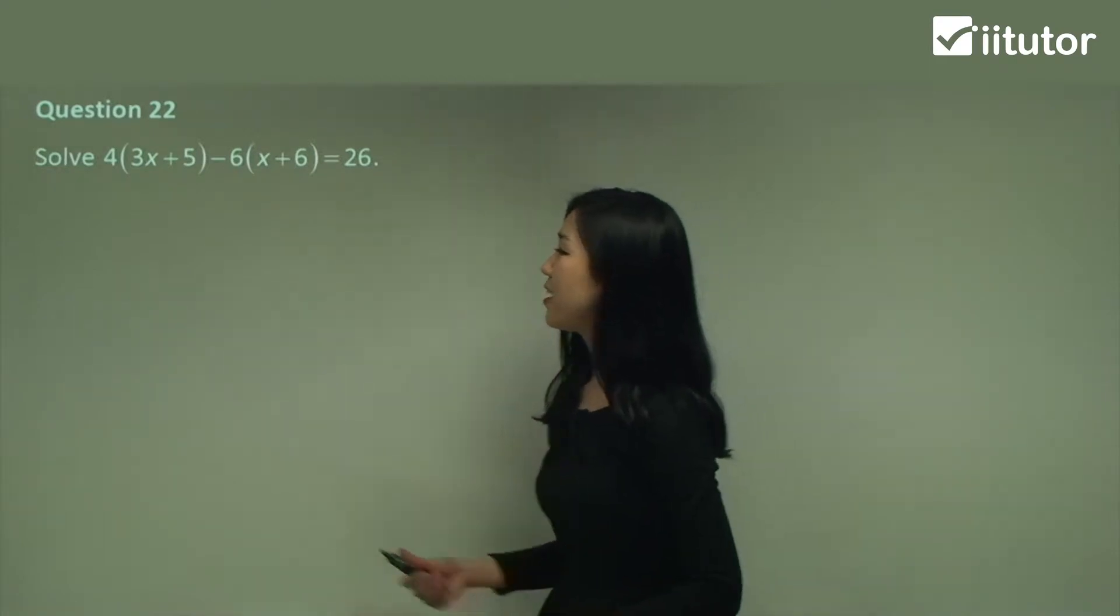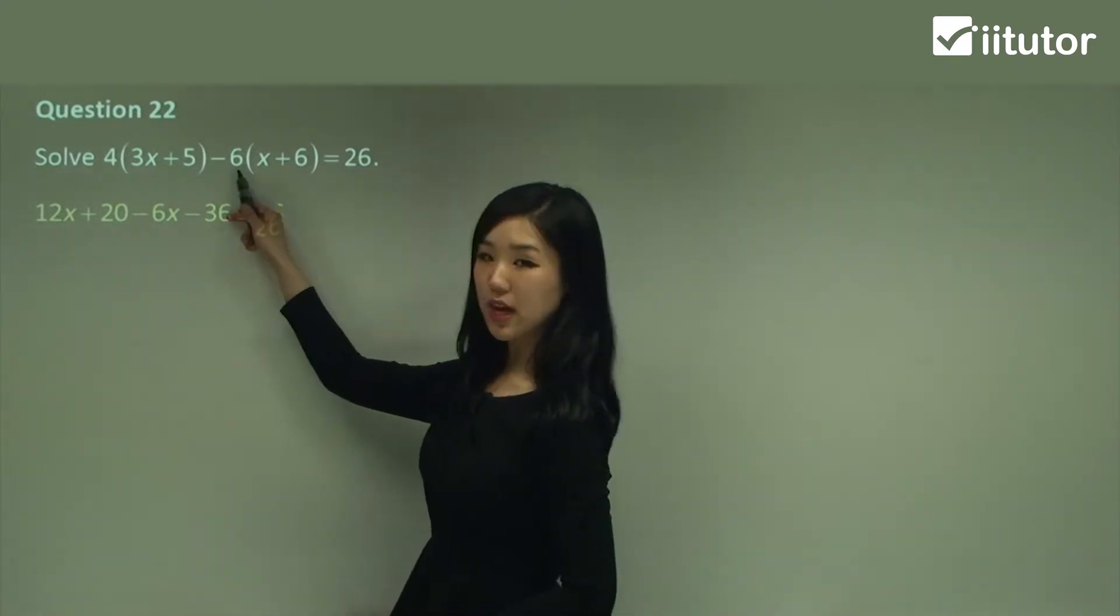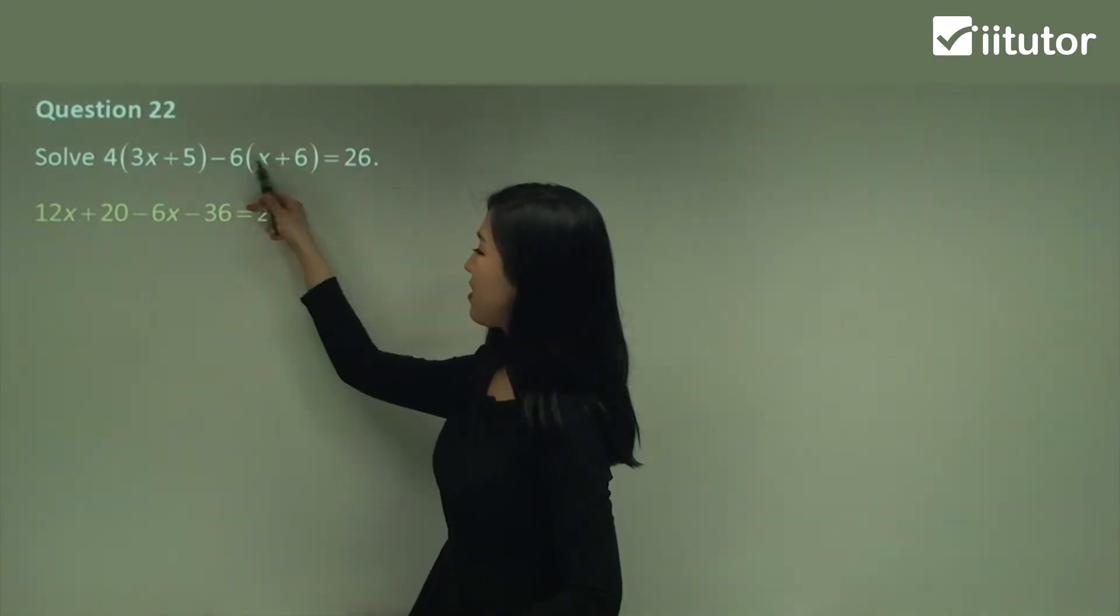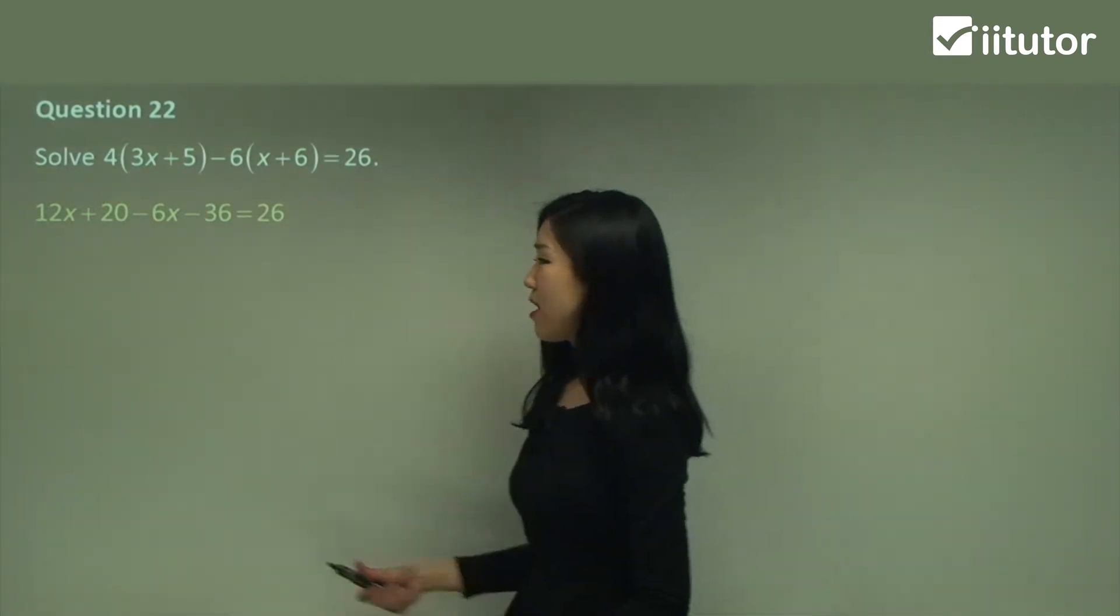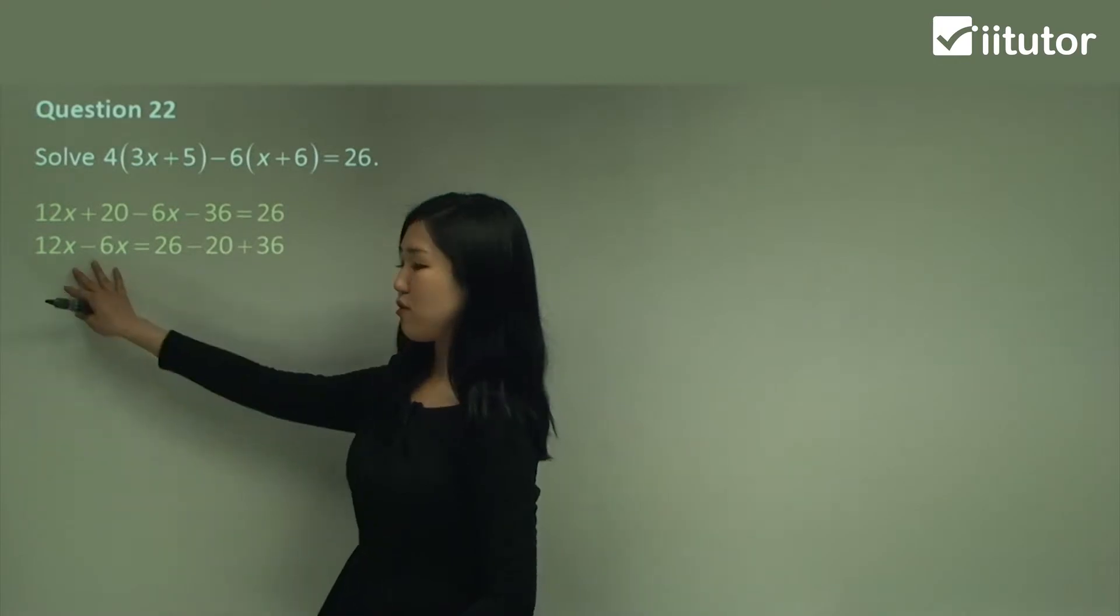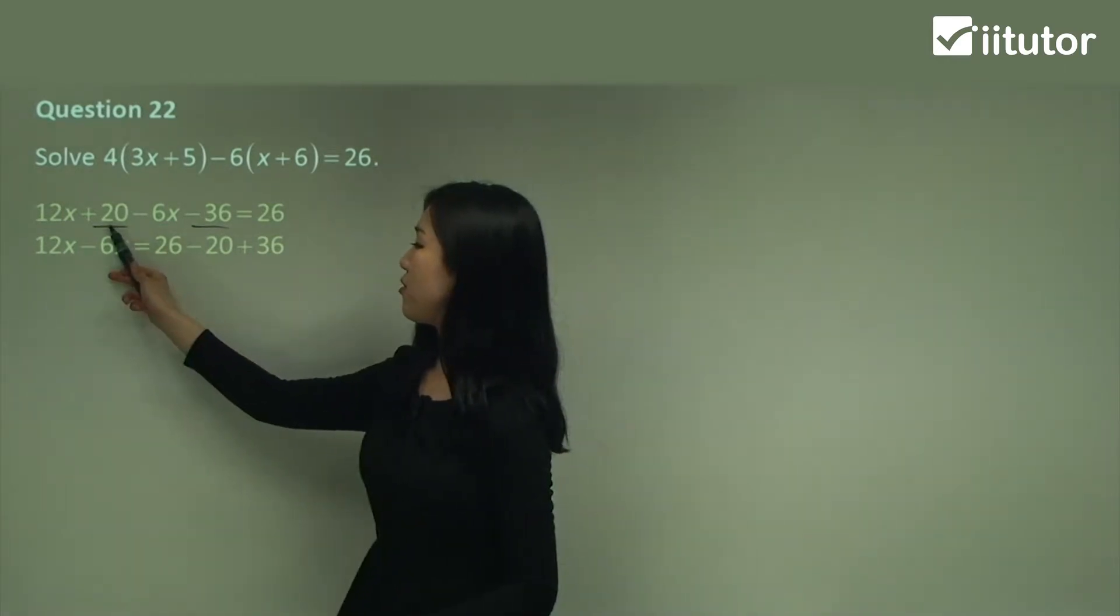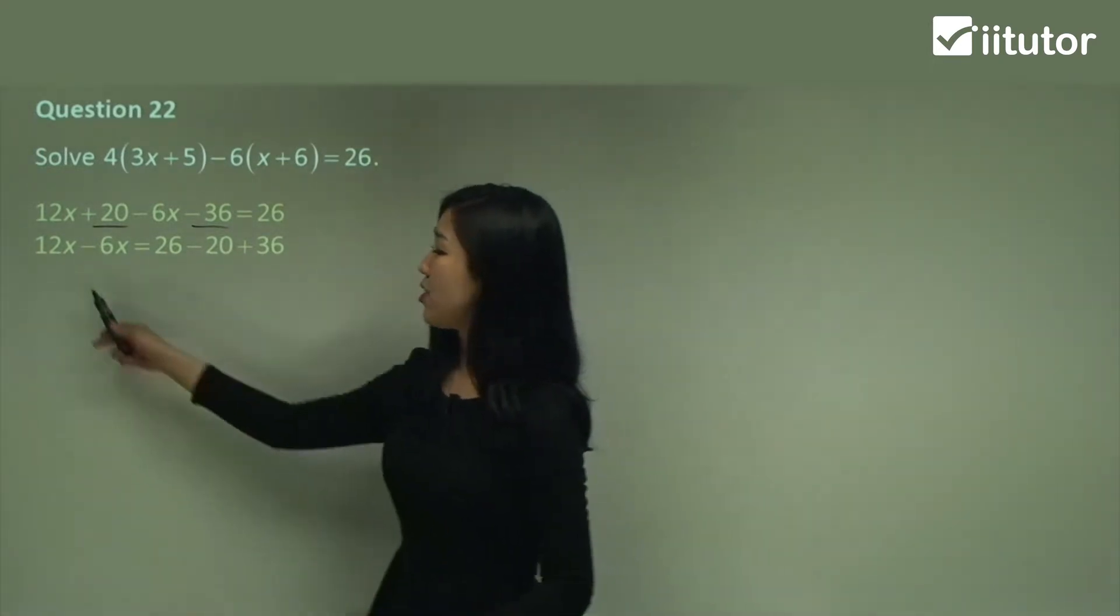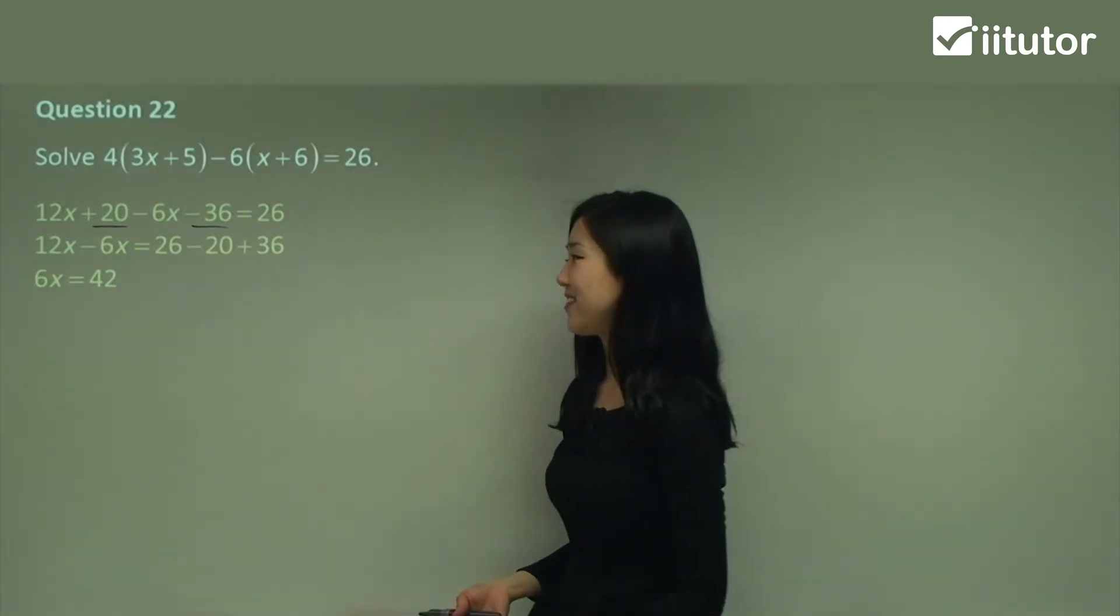Question 22. Again getting rid of all those grouping symbols by expanding. You can see that 4 times 3x is 12x. 4 times 5 is 20. Now watch out for the negative here guys. Negative 6 times x is negative 6x. Negative 6 times positive 6 is negative 36. Now again gather your like terms. So the 12x and the negative 6x I'll leave on my left and the 20 and the negative 36 move it all onto the other side. Positive 20 becomes negative 20. Negative 36 becomes positive 36. Now 12 minus 6 is 6x. That is 42. You guys can do your own calculations. I won't go through that.